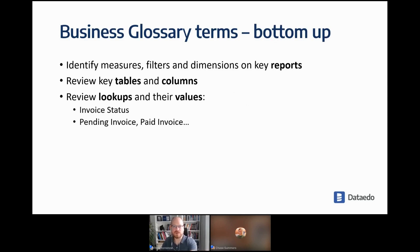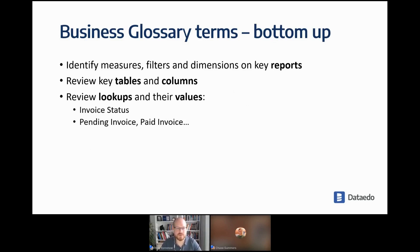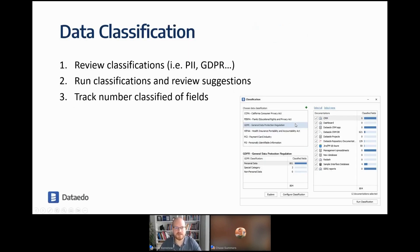For a bottom-up approach, start with reports and check what measures, filters, and dimensions you have — dimensions might be country or business division. Review key tables and columns. It's a good idea to create a term for every lookup and at least some values — for example, invoice status is a lookup and probably should be defined, as should its particular statuses like pending, pending invoice, and paid. Even something that seems obvious like 'paid invoice' might have specific meaning in your organization.